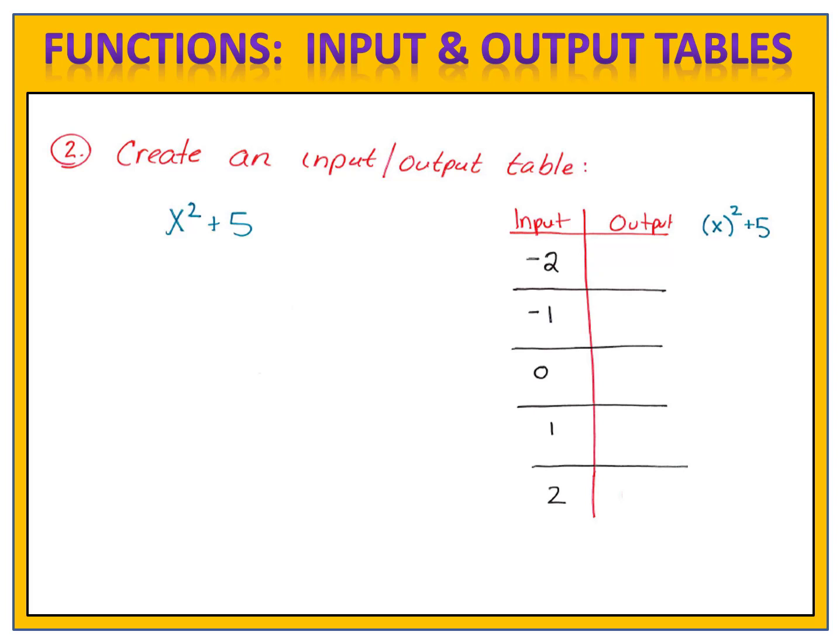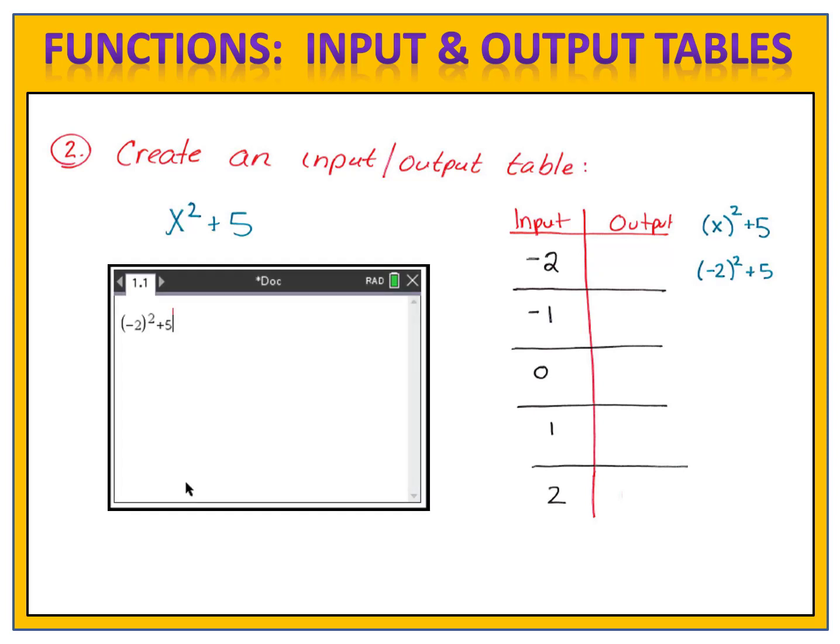And now I do the substitution. When I input a negative 2, I have negative 2 squared plus 5. I can type that directly into my graphing calculator, and get the output of 9. So when the input is negative 2, the output is 9. Can you come up with the inputs and outputs for the rest of this table? Pause the video here, and fill in all of the blanks.